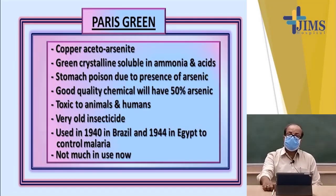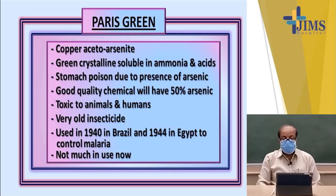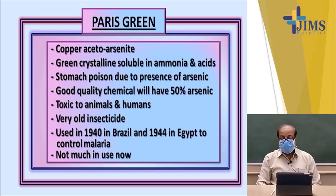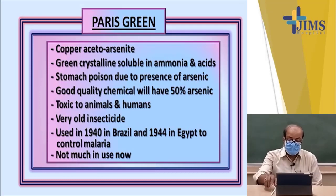Paris green is an age-old insecticide, actually copper acetoarsenite. It consists of green crystalline compounds soluble in ammonia and acids. It is a stomach poison, and because of the presence of arsenic, it kills the insect. Good quality chemical will have 50% arsenic, and it is toxic to animals and humans as well. During the 1940s it was used in Brazil, and even in 1944 it was used in Egypt to control malaria epidemics. However, Paris green is not much in use at present.